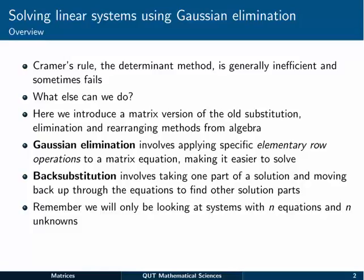Back substitution involves taking one part of a solution and using it to go back and find other parts. If you've already seen the video where we first talked about linear systems of equations, we actually did some back substitution there when we turned a set of equations in matrix form back to regular equation form. We're only going to be looking at systems with N equations and N unknowns, but this method does work for rectangular systems, which have different numbers of equations and unknowns.